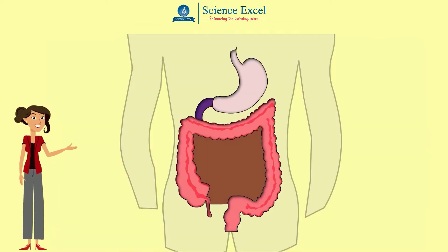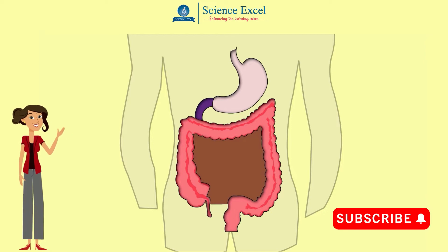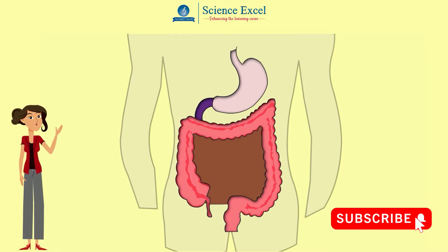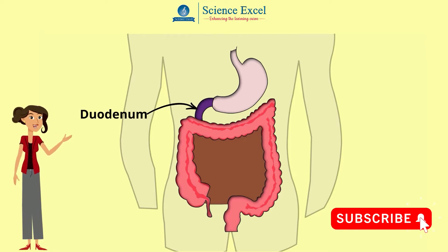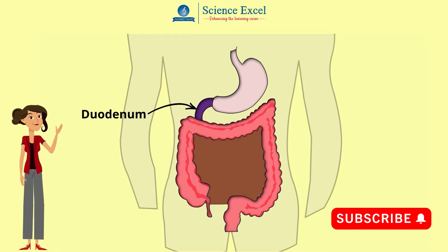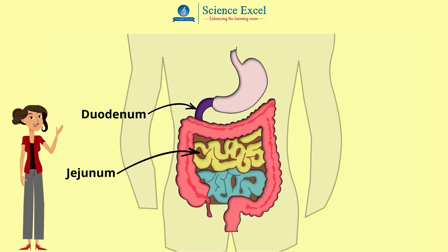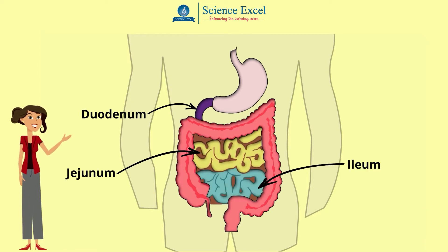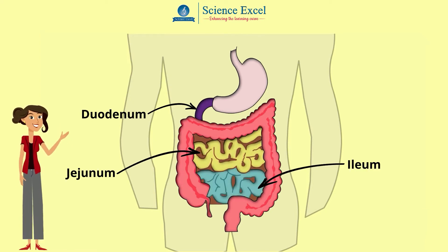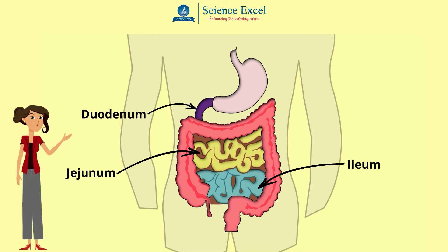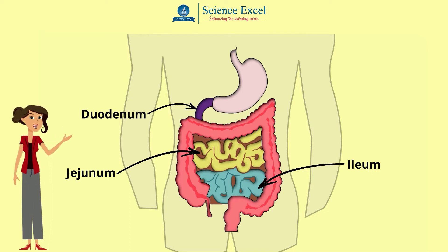The small intestine is divided into three parts: the duodenum, the jejunum, and the ileum. Let us understand what happens to the chyme in the first section of the small intestine called the duodenum.